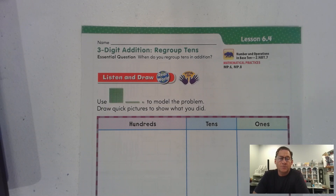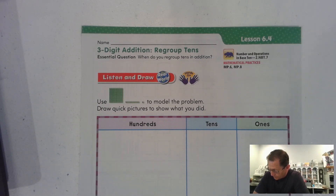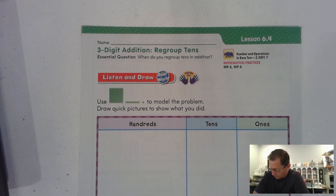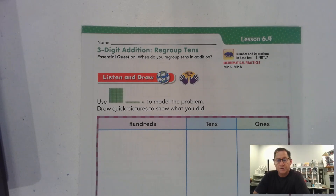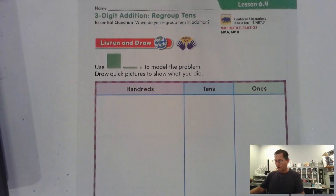Listen and draw: draw quick pictures to show what you did to solve the following problem. Remember to pause the video after I read the problem so that you can solve it. On Monday, 253 children visited the zoo; on Tuesday, 324 children visited the zoo. How many children visited the zoo those two days? Go ahead and pause the video, draw a quick picture, solve it, and then resume.